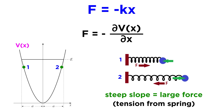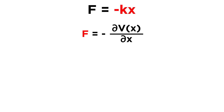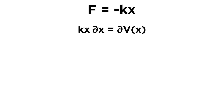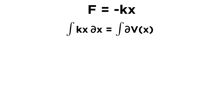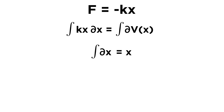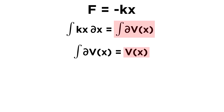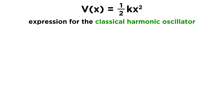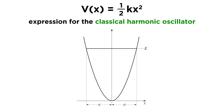So a flat potential would mean zero force, and a large gradient or steep slope will mean a large force. From here, we can substitute Hooke's law in place of F, so F becomes negative kx. Let's now multiply both sides by negative one to get both sides positive, and then multiply by dx, so that we have kx dx equals dV of x. Now let's integrate both sides. Don't get tripped up by dV of x — this is not really any different than dx. We know that integrating dx gives us x, so the integral of dV of x will be V of x. Then integrating kx dx will give us one-half kx squared.